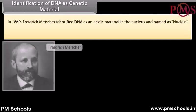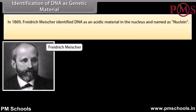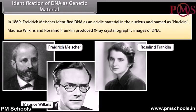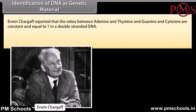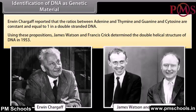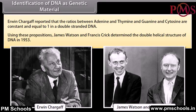Identification of DNA as genetic material. In 1869, Frederick Miescher identified DNA as an acidic material in the nucleus and named it nuclein. Maurice Wilkins and Rosalind Franklin produced X-ray crystallographic images of DNA. Erwin Chargaff reported that the ratio between adenine and thymine, and guanine and cytosine, are constant and equal to 1 in a double-stranded DNA. Using these findings, James Watson and Francis Crick determined the double helical structure of DNA in 1953.